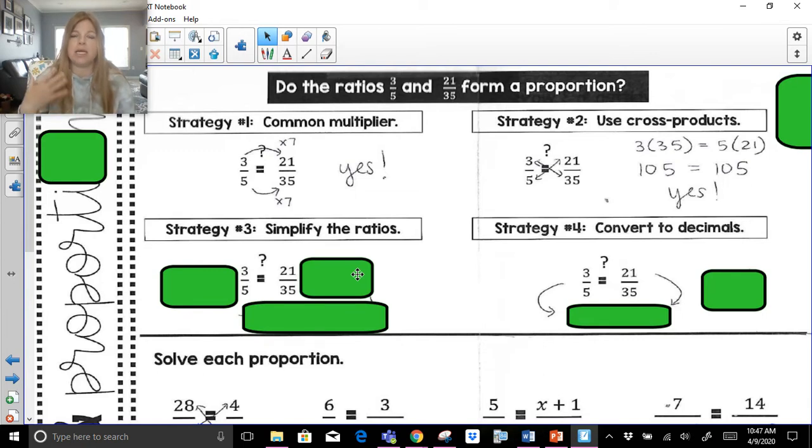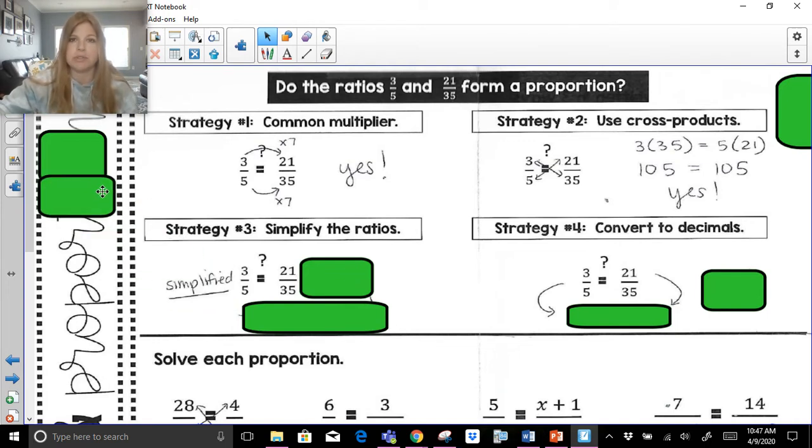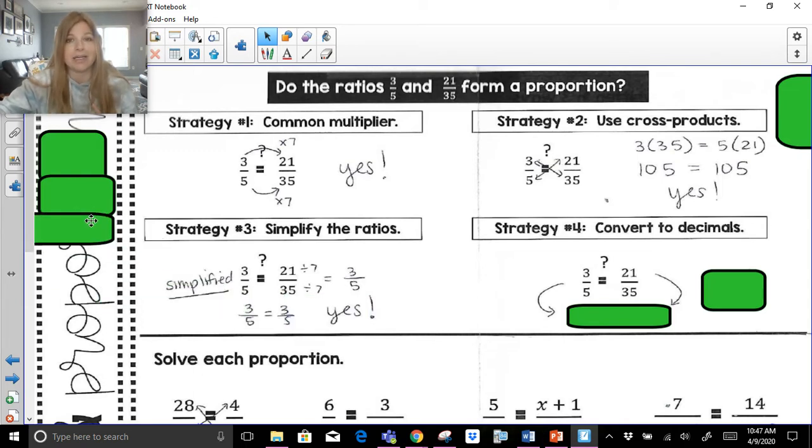Simplifying the ratios. Now, this one could be something that, again, if you're not sharp with your math facts, which we need to be, guys, this could be a little bit difficult. 3 fifths, that's already simplified. So there's really nothing to do there. But 21 over 35, those can both be simplified by 7. So if I simplify that fraction by 7, I get 3 fifths. And if I simplify my fractions, then I notice I get the exact same thing. 3 fifths equal 3 fifths. And again, I know it's good.